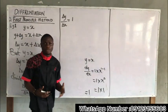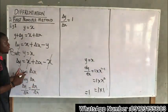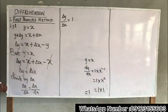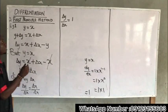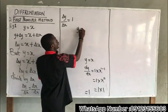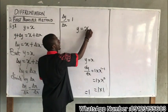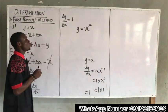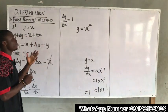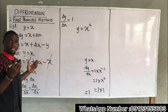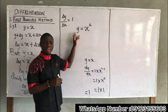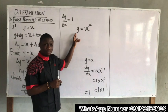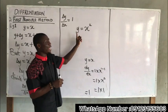That is the concept behind the first principle method of differentiation. Now let's solve another example using this method. If I have y equal to x squared and I solve it using the general method, I would get 2x.